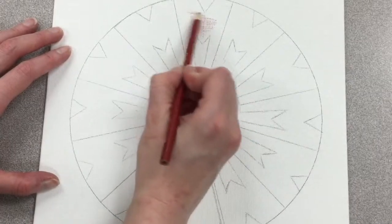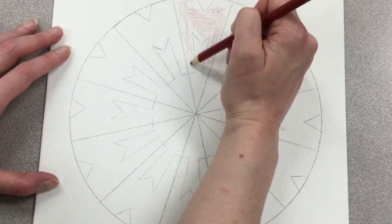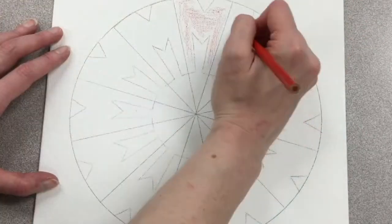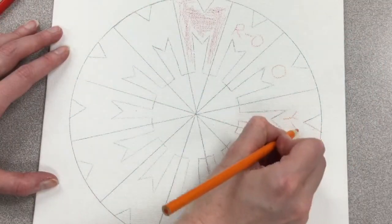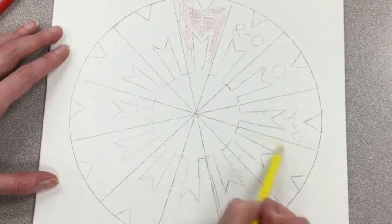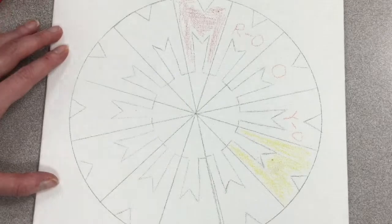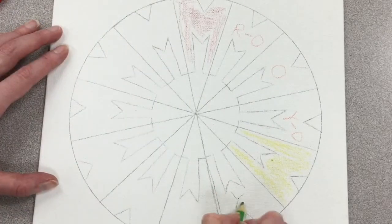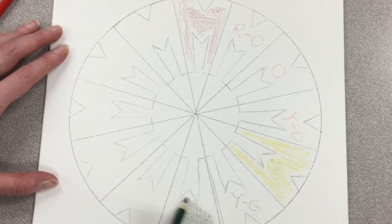The last step in getting ready to paint next class is to take my colored pencils and to lightly color in or write in the name of the color on my canvas board, so that when I go to paint, I know exactly where my colors are going. I want to make sure that I do this in colored pencil, or when I go to paint over words that I've written in graphite, the graphite will show through my paint, and that will make me really unhappy.